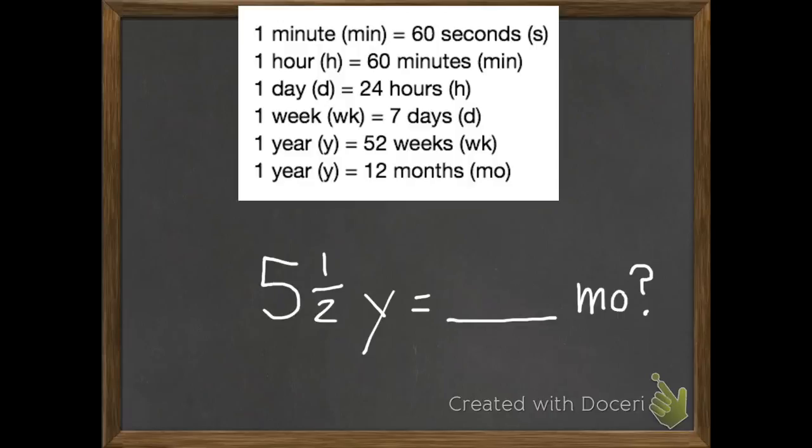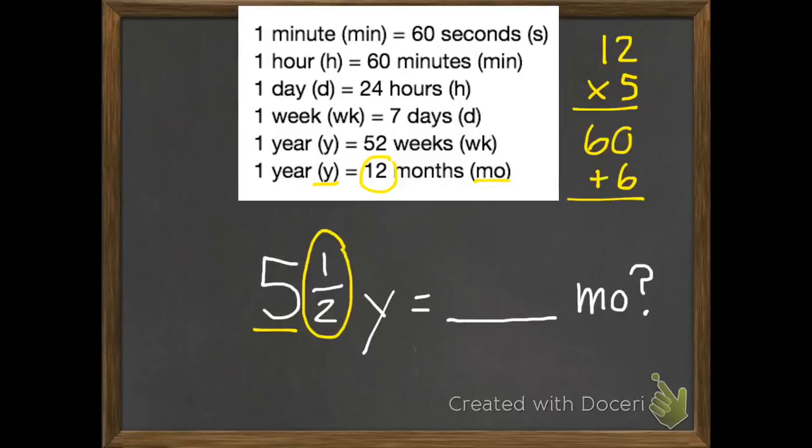For this example we have a half in here. So 5 and a half years equals how many months. We know that 12 months equals 1 year. So we're going to multiply those 5 whole years first. 12 times 5 is 60. Then we have another half of a year. A year is 12 months, so half of 12 is 6. So 60 plus 6 equals 66. So 5 and a half years equals 66 months.